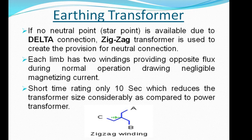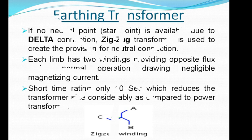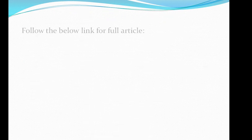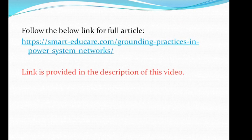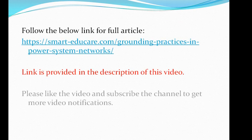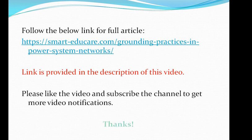This is the zigzag transformer or earthing transformer, which is artificially used to create a star point where a delta connection exists and no neutral connection is available. If you want this video content in written format, you can follow the link provided in the description below. Please provide your comments and let us know if you have any queries. Thanks for watching.